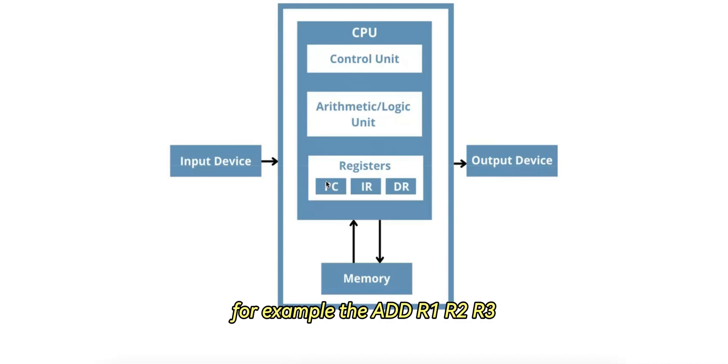For example, the ADD R1, R2, R3 instruction in assembly. Assembly is a low-level programming language that directly maps to machine code instructions. How does this work on the register level?